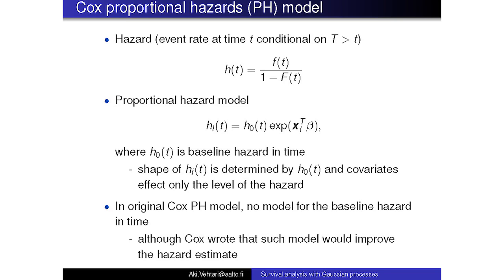In the original Cox proportional hazard model there was no model for the baseline hazard. Because it's the same for everyone, it's possible to cancel it out in computation if you're just interested in the betas and whether these betas are different from zero. Cox wrote already in the original paper that it would be useful to have a model for the hazard in time, but since he was doing this in the 1970s it wasn't computationally feasible.